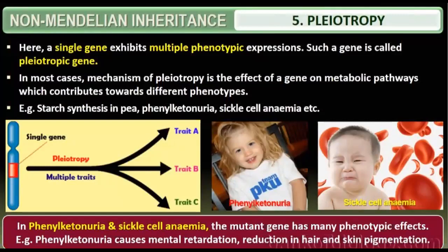Regarding height: if all six genes are dominant, height will be very tall. If all six genes are recessive, height will be very small. If three genes are recessive and three are dominant, height will be intermediate.